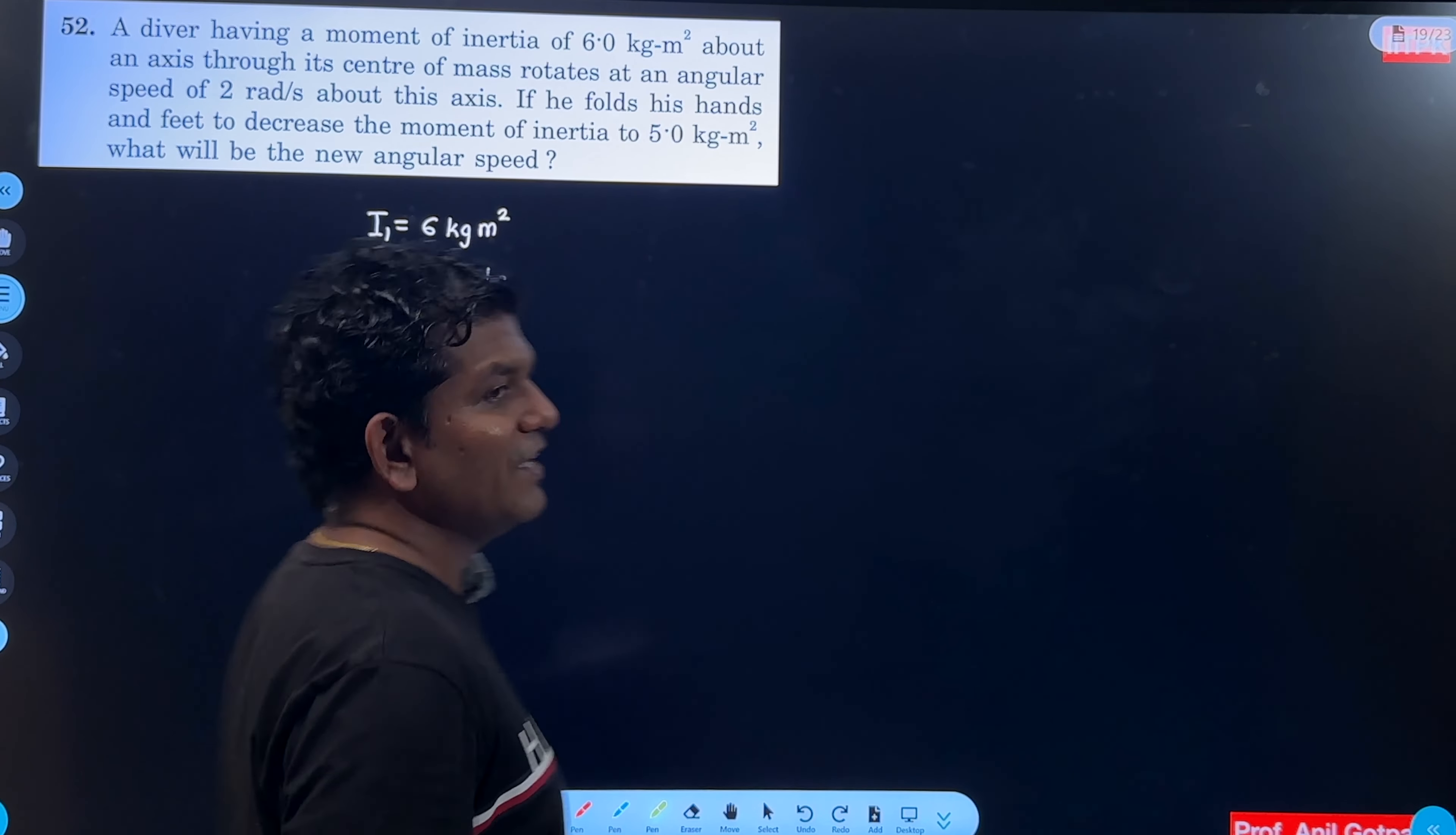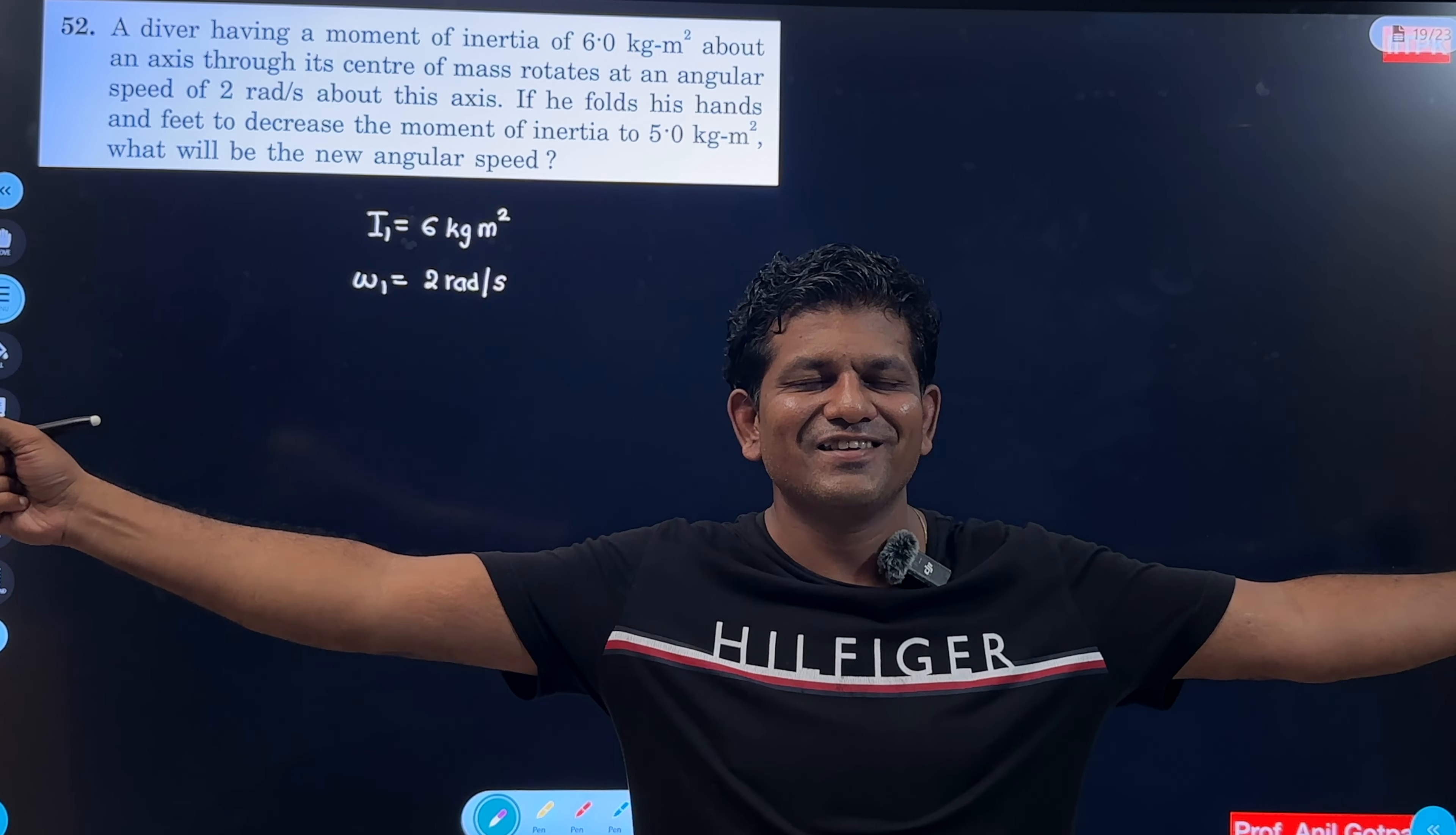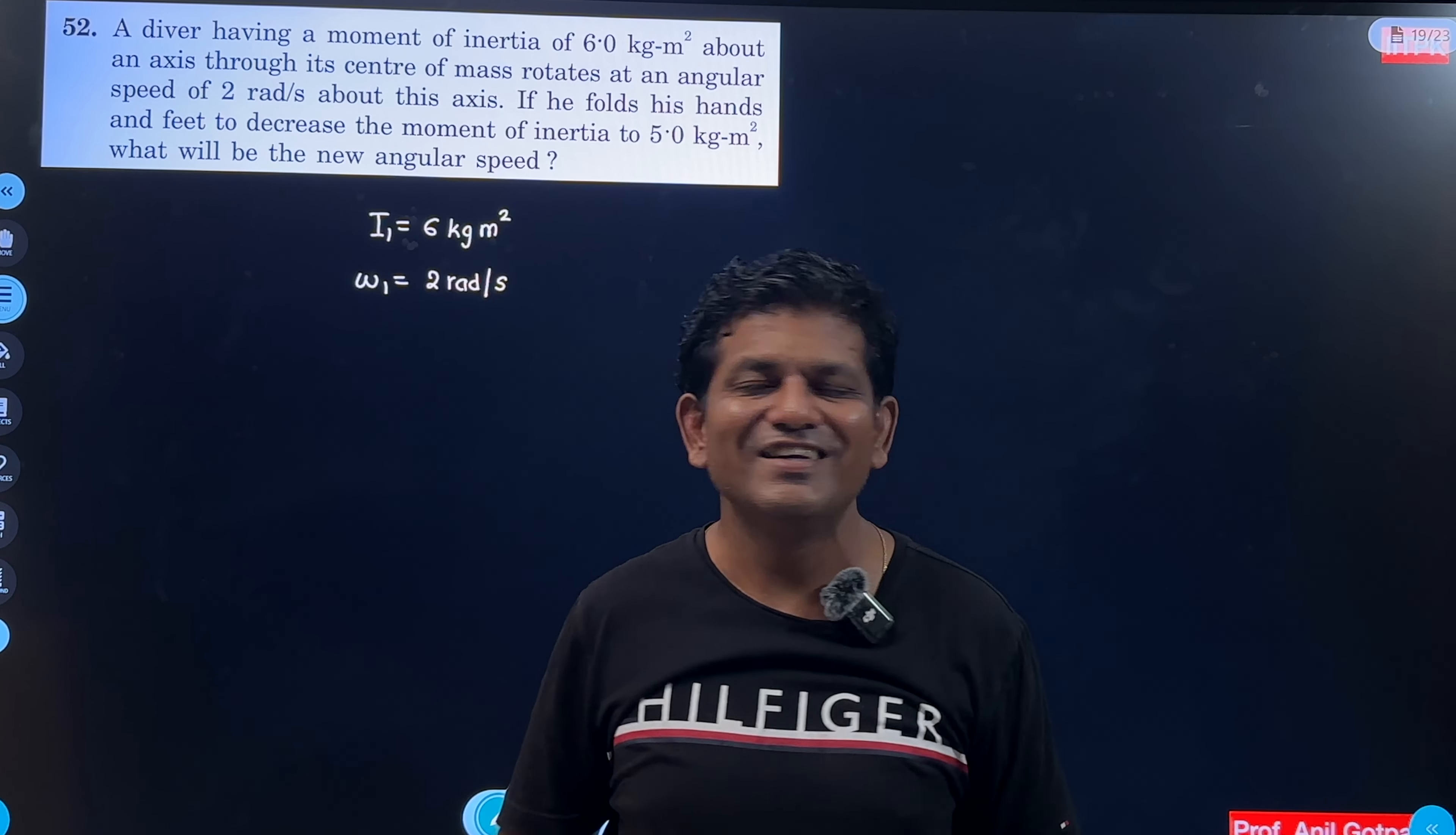What is the problem given? If he folds his hands. So before the hands were like this. Now the hands are inside. So before the moment of inertia was increased. Now the moment of inertia decreased. So the omega will increase.